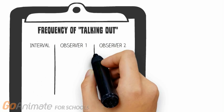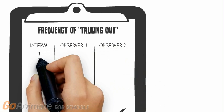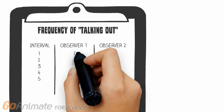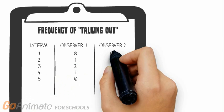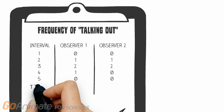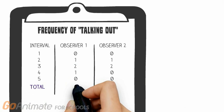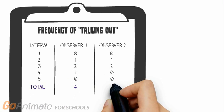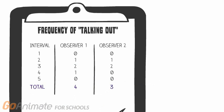Here we see the frequency of talking out recorded by our two independent observers during each of the five-minute intervals, and the bottom shows the total number of talkouts recorded for Observer 1 and Observer 2.